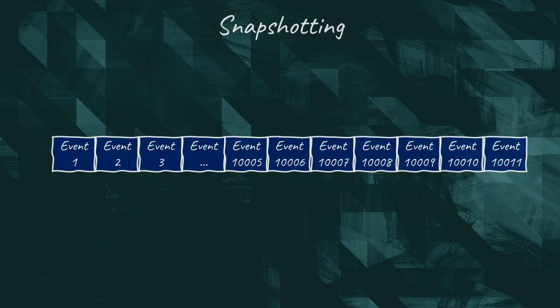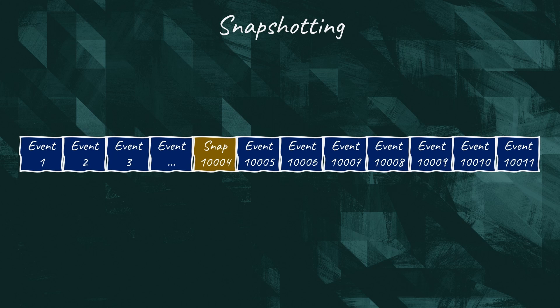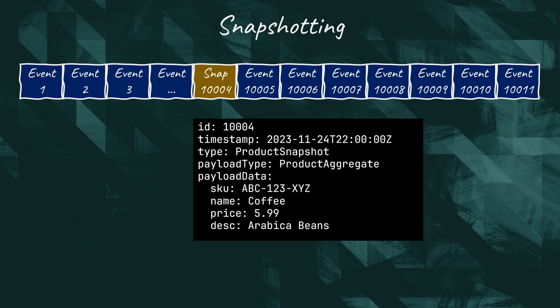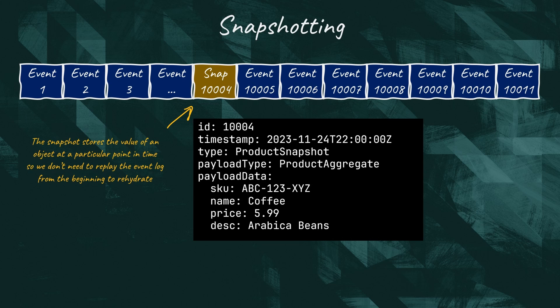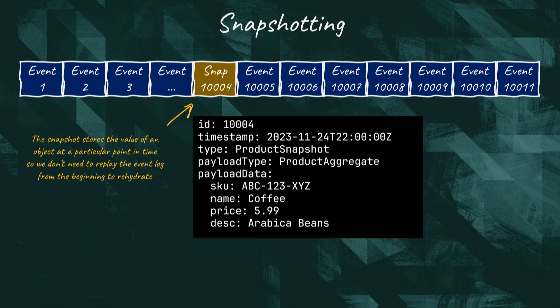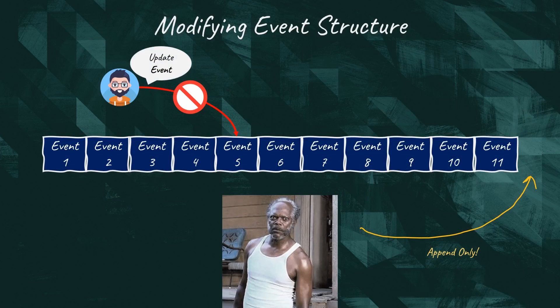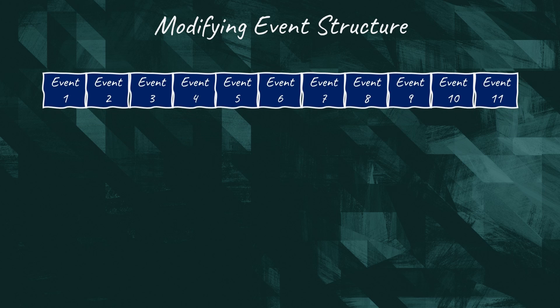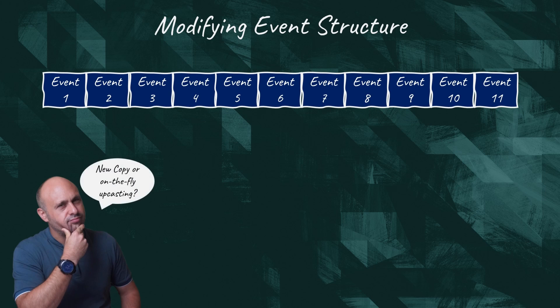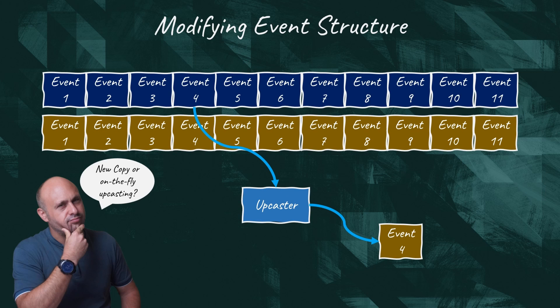There's also the problem that replaying all events to hydrate our model becomes inefficient over time — queries and application startup can take very long. In that case, it may be necessary to persist the model or introduce snapshot events that capture the state of an entity at a certain point in time. It's a bit like saving progress in a video game: rather than starting from scratch, we resume event processing from the last snapshot. Modifying events is forbidden, so changing the format of events is painful. We either lift the restriction, replay all events to create new ones, or use event upcasters that transform the old event format to the new format on the fly.